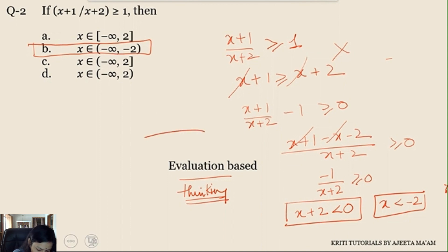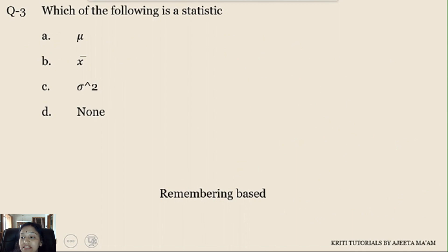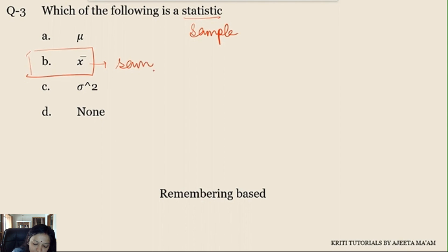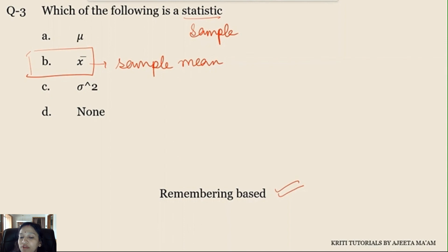The third question asks which of the following is a statistic. It's a simple question based on remembering the concept and terms. The word 'statistic' is used for a sample, while for the population we use the word 'parameter'. Out of the four options, only option B represents a sample — it is the sample mean. So no solving is needed, just remember the concept of statistic.